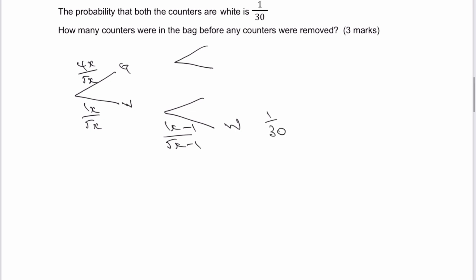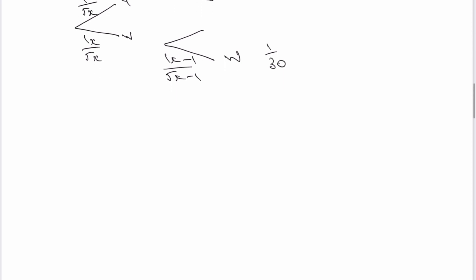And it looks a little bit tricky to begin with, but we'll work it through. So what we've got is 1x over 5x multiplied by 1x minus 1 over 5x minus 1. Now, I do understand I've just left that 1 in place of 1x.